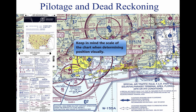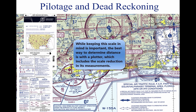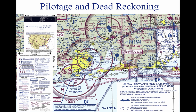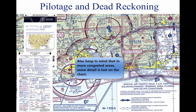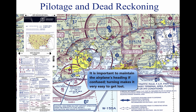When determining position from checkpoints, remember that the scale of a sectional chart is 1 inch equals 8 statute miles or 6.86 nautical miles. For example, if a checkpoint selected was approximately 1.5 inches from the course line on the chart, it is 4 statute miles or 3.43 nautical miles from the course on the ground. In more congested areas, some smaller features are not included on the chart. If confused, hold the heading. If a turn is made away from the heading, it is easy to become lost.